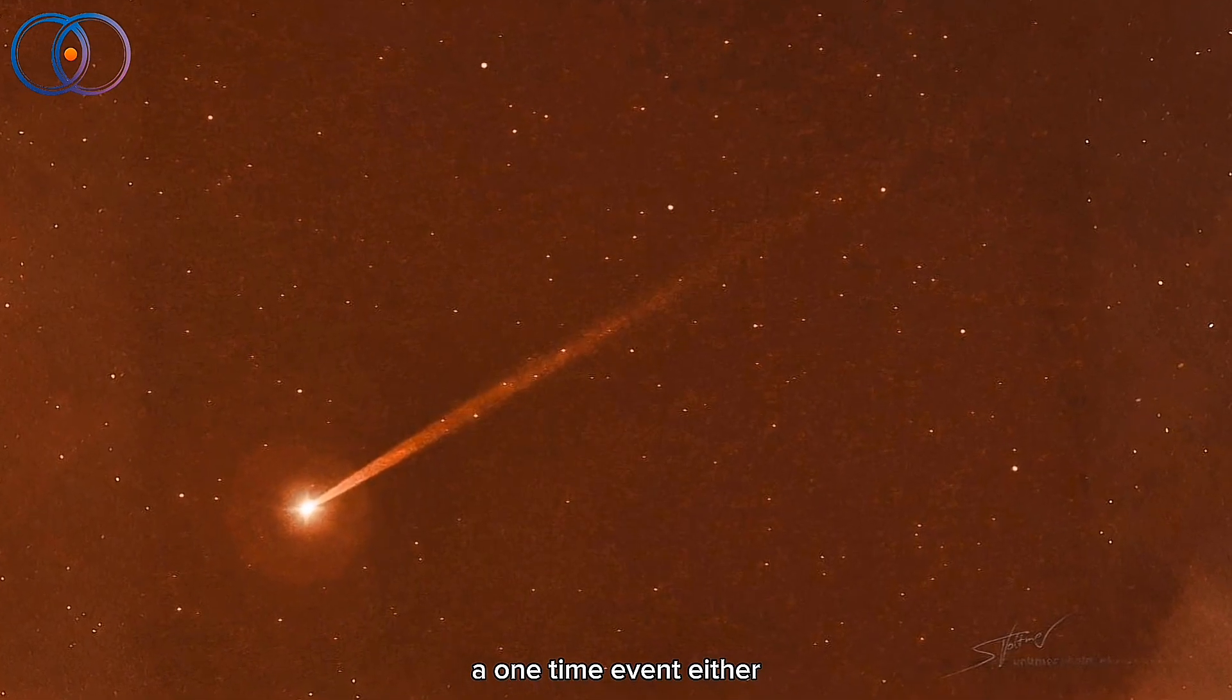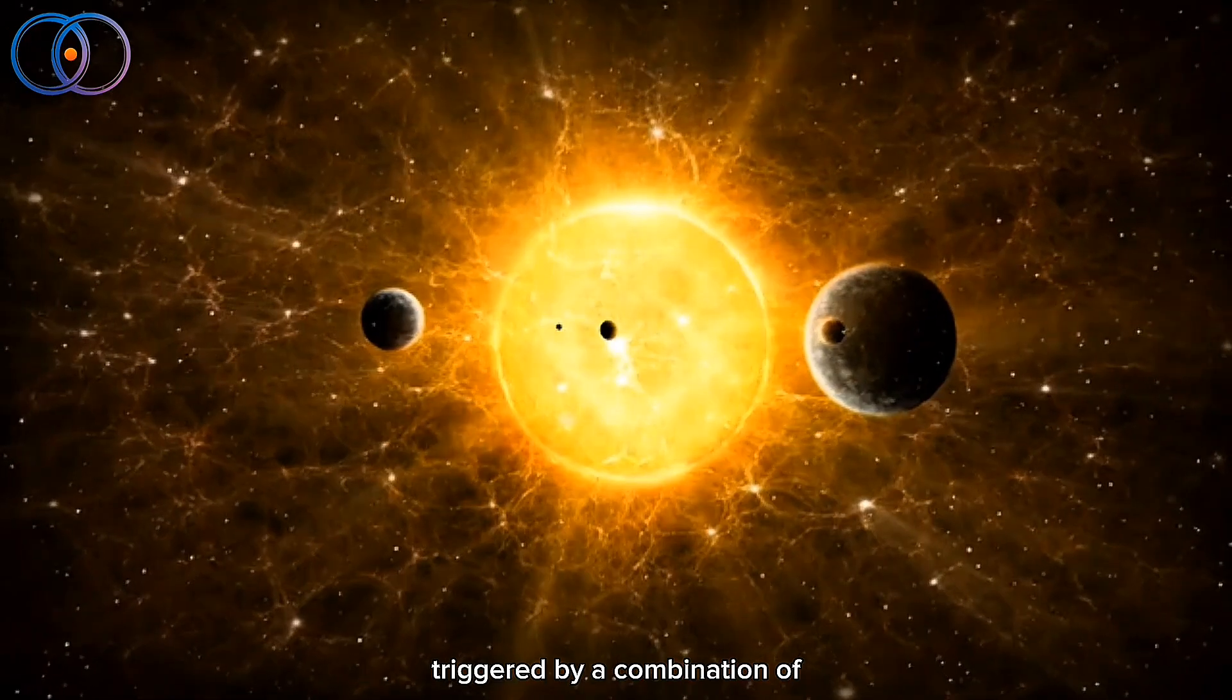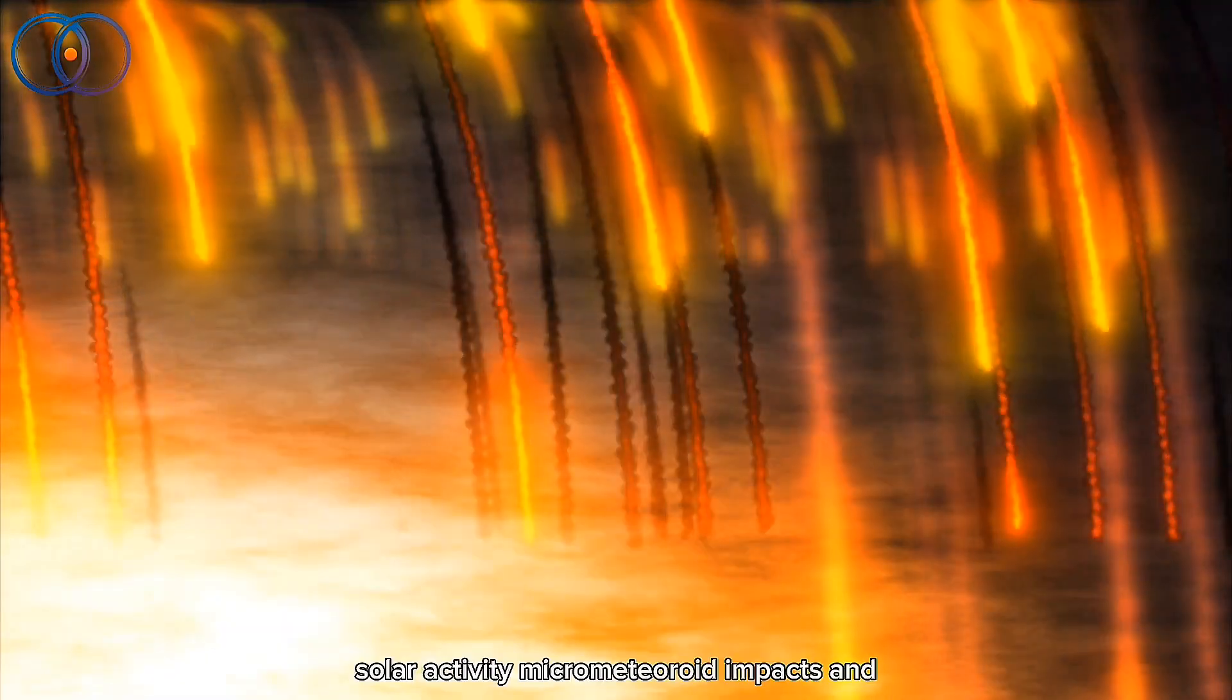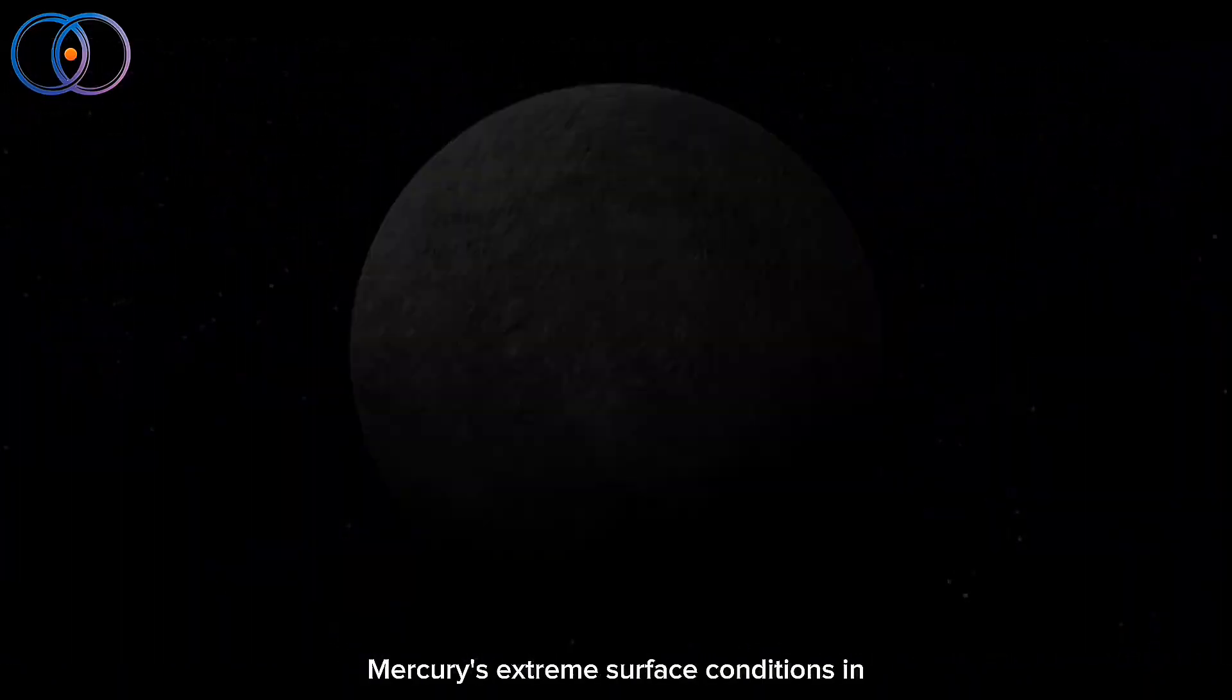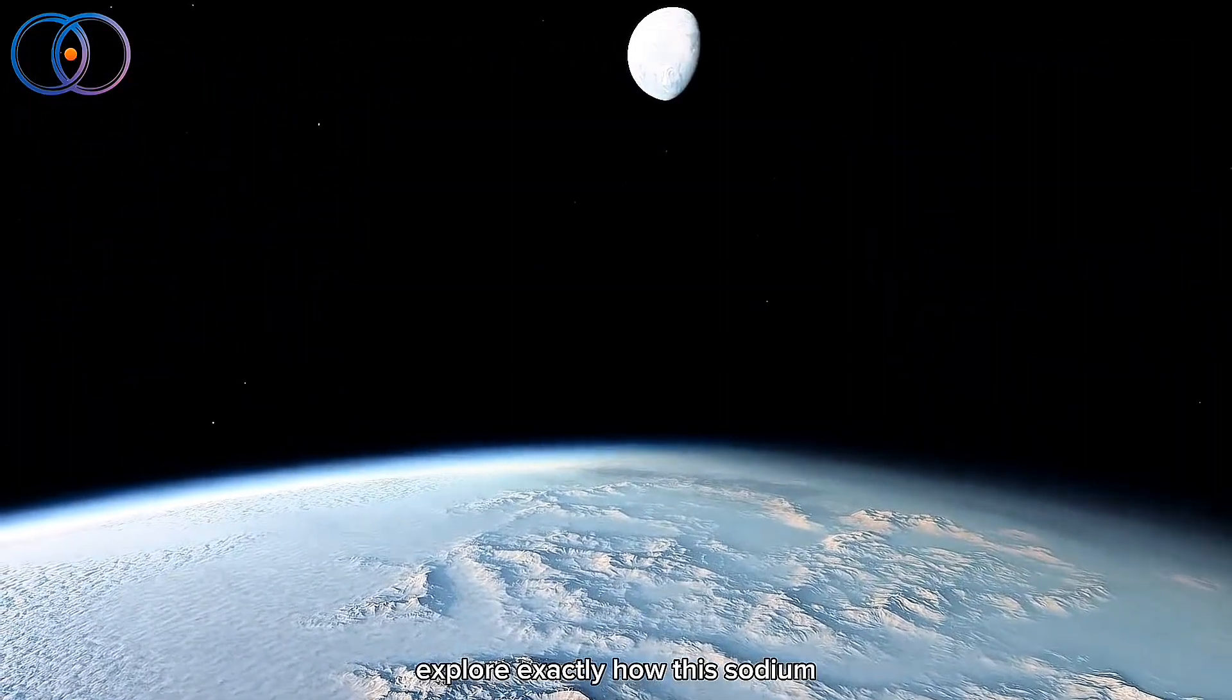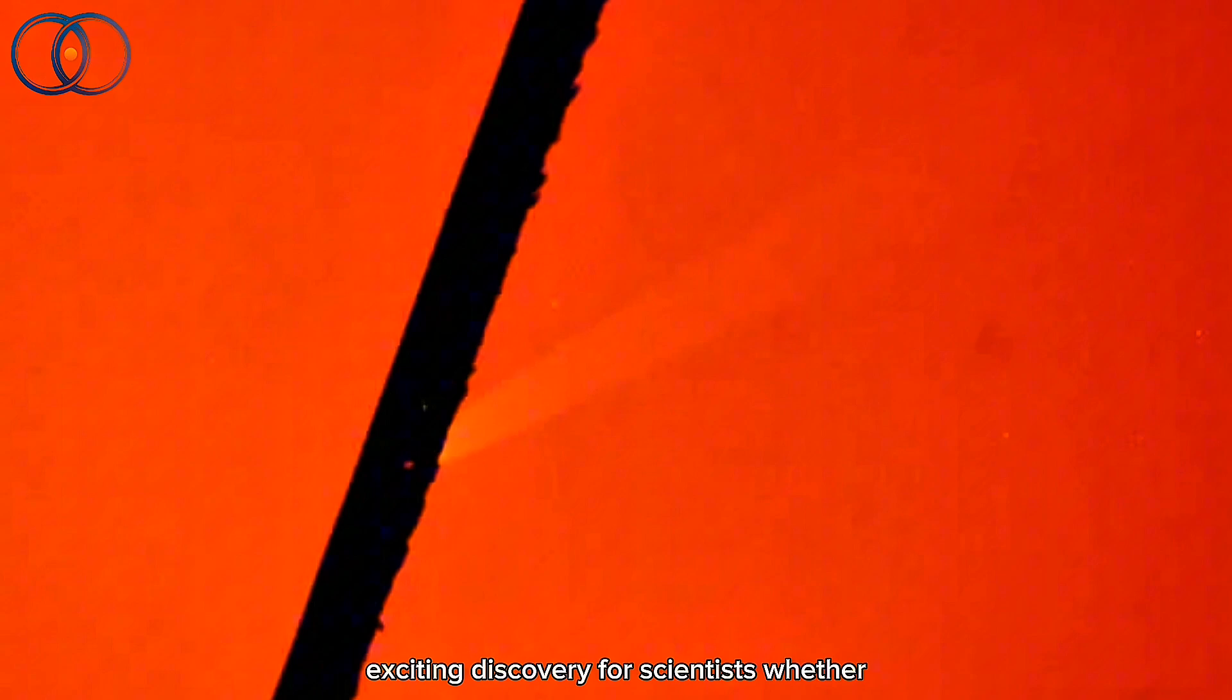This isn't a one-time event either. It's happening regularly and is triggered by a combination of solar activity, micrometeoroid impacts, and Mercury's extreme surface conditions. In this video, we're going to explore exactly how this sodium tail forms, what causes it, and why it's such an exciting discovery for scientists.